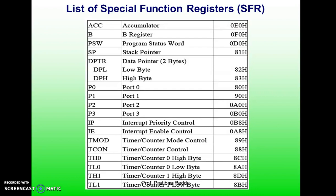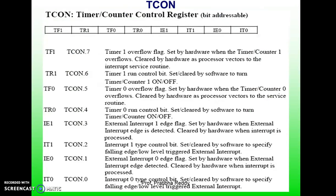The 8051 has two timers or counters. They can be used either as timers to generate a time delay, or as counters to count events happening outside the microcontroller. The 8051 has two timers, timer 0 and timer 1, both are 16 bits wide. Since the 8051 has an 8-bit architecture, each 16-bit timer is accessed as two separate registers of low byte and high byte.